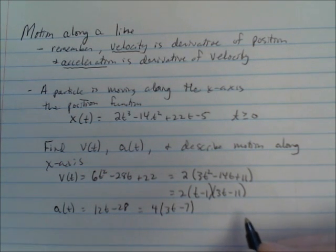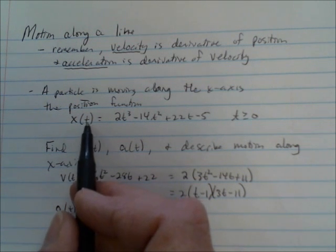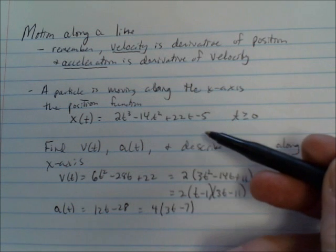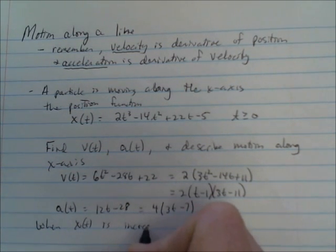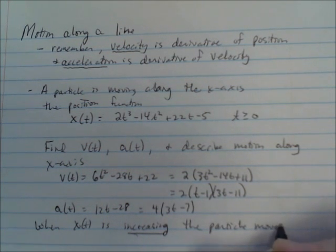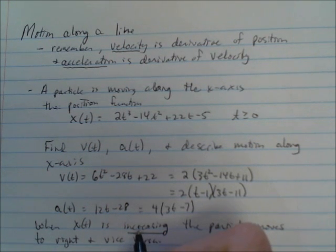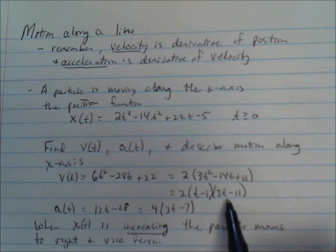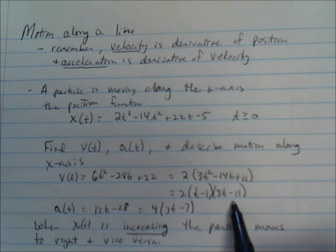So those are our two fully factored functions. When x is increasing, the particle is moving to the right — positive x values go to the right, and more negative values go to the left. So when x of t is increasing, the particle moves to the right, and vice versa. The velocity equals zero at t equals 1 and t equals 11/3. At t equals 1, the particle stops moving right and starts moving left, then stops again at t equals 11/3 and starts moving right again.